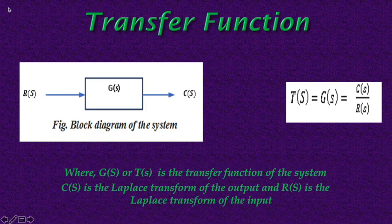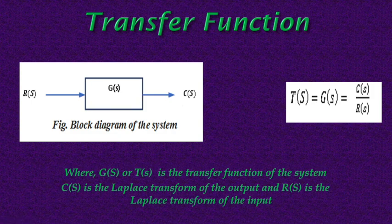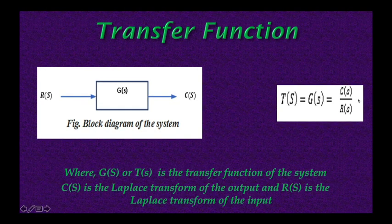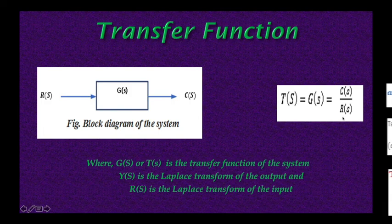Assuming all initial conditions to be zero, if R(t), C(t), and G(t) are the input, output, and process or impulse function respectively, and their corresponding Laplace transforms are R(s), C(s), and G(s), then the block diagram can be represented as shown in the figure. By definition, T(s) equals G(s) equals C(s) divided by R(s), where G(s) or T(s) is the transfer function, C(s) is the Laplace transform of output, and R(s) is the Laplace transform of input.